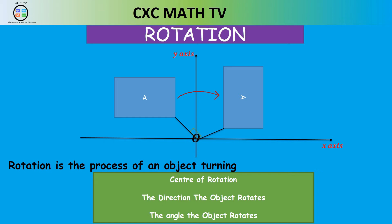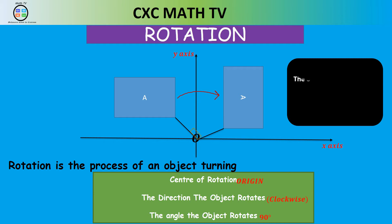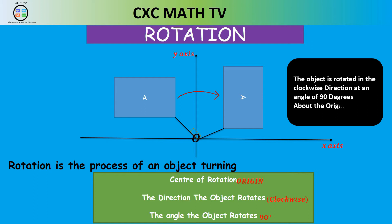Looking at this diagram, we can find the center of rotation by drawing lines from two corresponding points on the object and image. We see the object is turning in a clockwise direction, and if we measure the angle, it is 90 degrees. So the object is rotated 90 degrees clockwise about the origin.